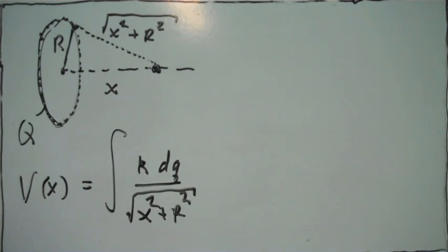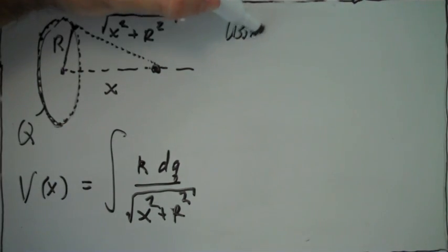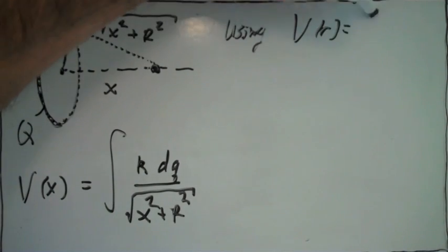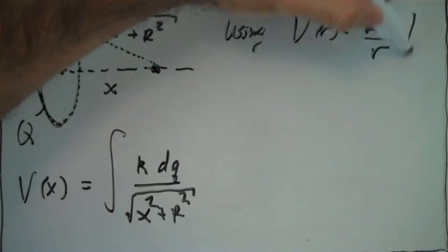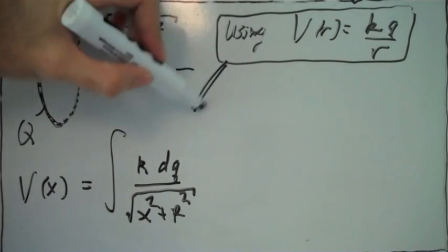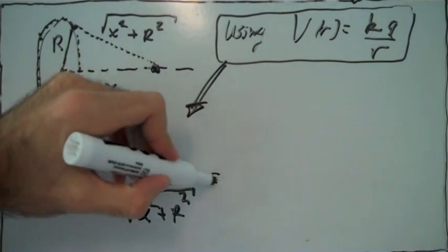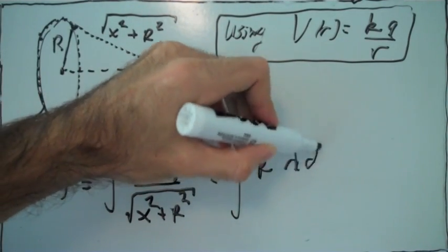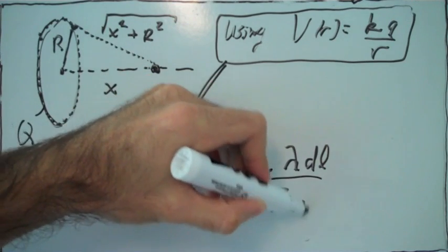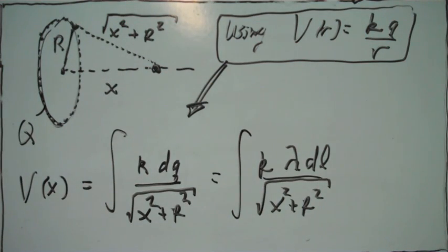To understand how to set up this integral, we've got to take into account that every point charge produces the potential of this form, where r is the distance from the point charge. So each point charge with charge dq produces that potential, and dq, each little point charge, has a charge equal to lambda times dl, where lambda is the charge density.